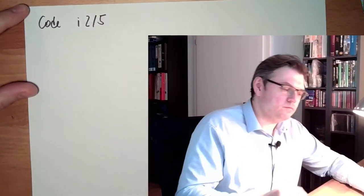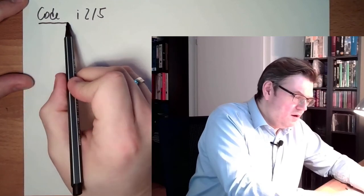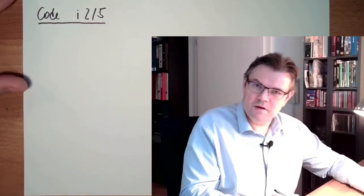However, it's written a little bit different. Usually we write it code i 2 slash 5. Maybe this i is not there. Two of five, interleaved.